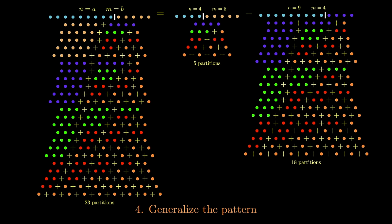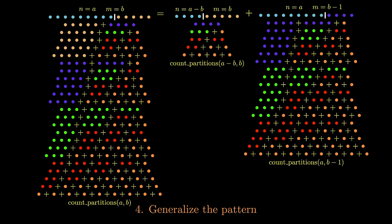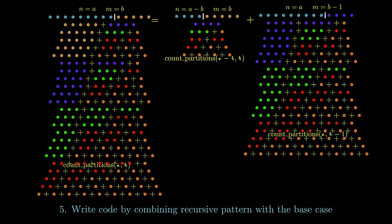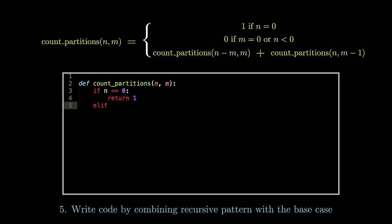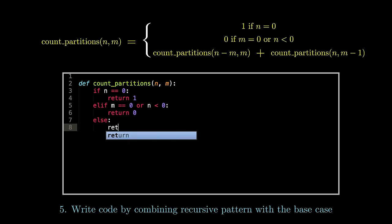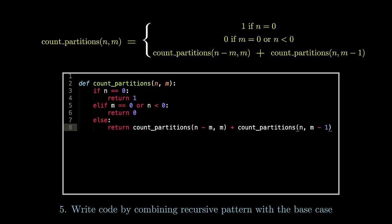Let's now generalize this pattern. If we want to solve the count partitions problem called on a and b, it will end up being the sum of count partitions called on a minus b and b, and count partitions called on a and b minus 1. This is the key recursive relation that will solve this problem. One interesting wrinkle is that one of our recursive calls provides an argument of n minus m, and it's perfectly valid to have cases where n is less than m, which then means the new call will have a negative argument. To account for this, if the n value provided is negative, we will have zero partitions — this is a good example of how you might have to modify base cases after finding a general recursive pattern. The cool thing about recursion is that for such a tricky problem, our final solution actually ends up being only six lines of code.